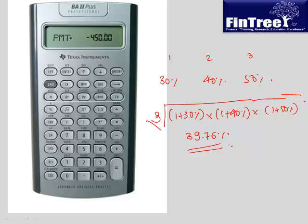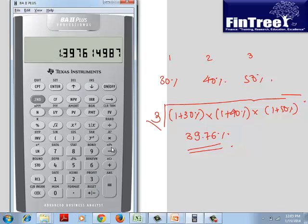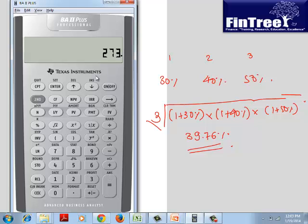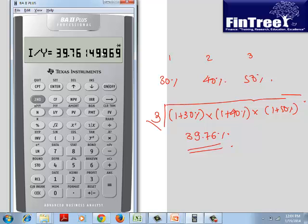To confirm with time value of money: start with 100, add 30% = 130, add 40% = 182, add 50% = 273. Set FV = 273, PV = -100, N = 3, compute IY = 39.76%. The TVM calculator does geometric compounding. Geometric mean means you raise to a power rather than multiplying — that's the meaning of 'raise to' or 'under root'.